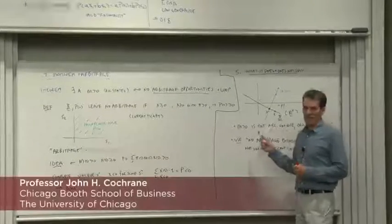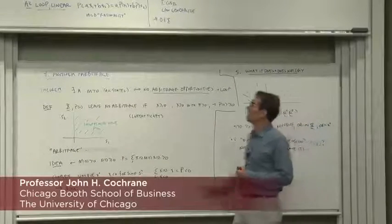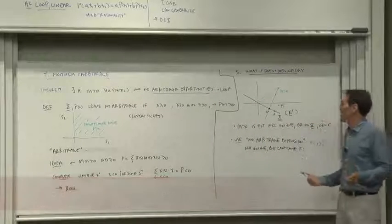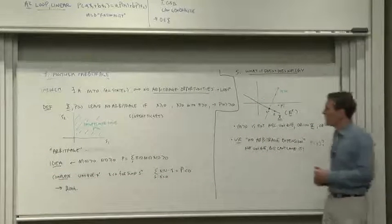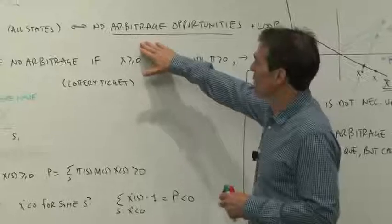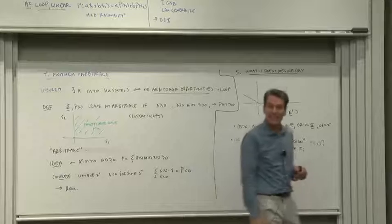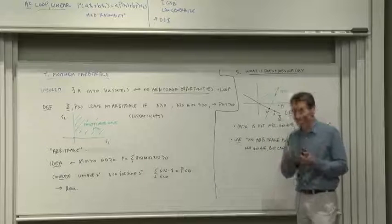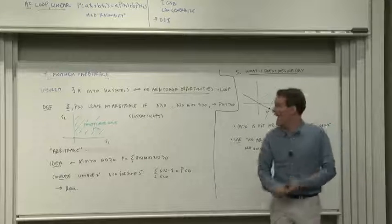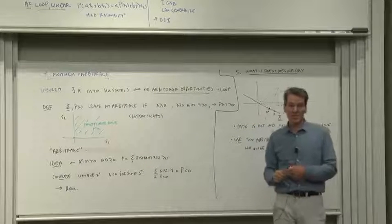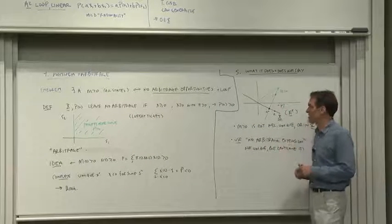So now let's look at what this theorem says and does not say, and what's the difference between our no arbitrage theorem and our law of one price theorem. The no arbitrage theorem says if there are no arbitrage opportunities, there exists a positive discount factor. It did not say that is a unique discount factor, and it did not say that discount factor is in the payoff space. So these are very different characters of discount factors.